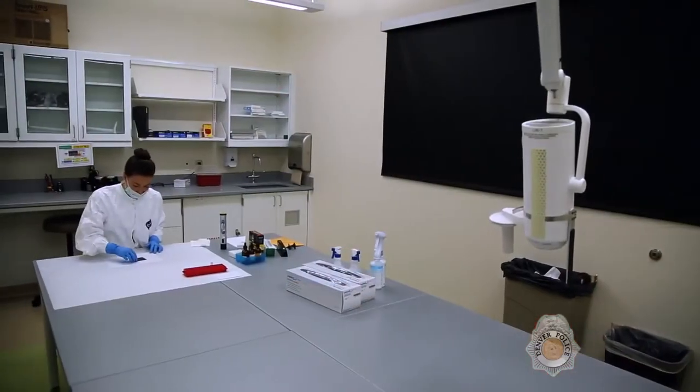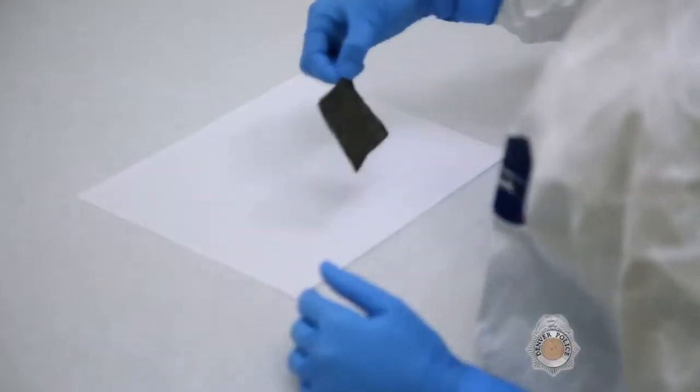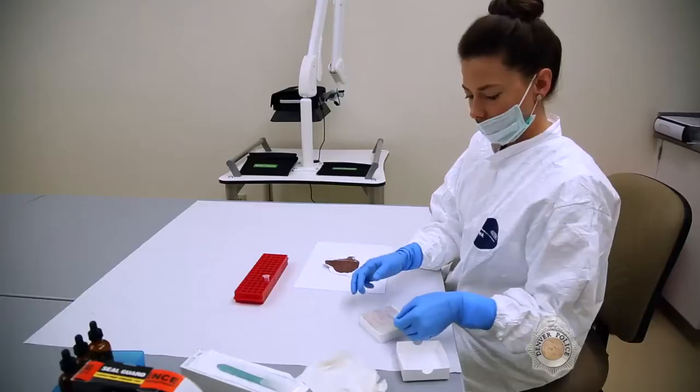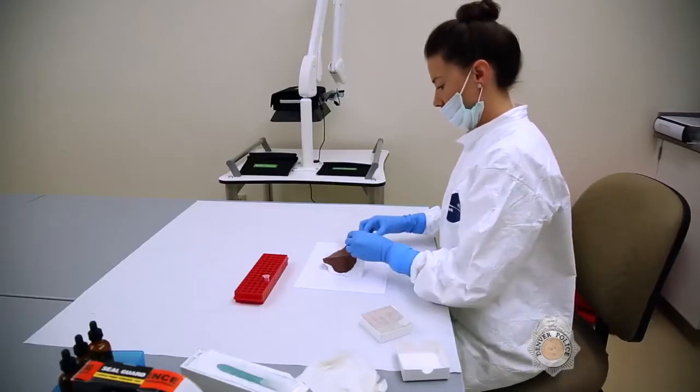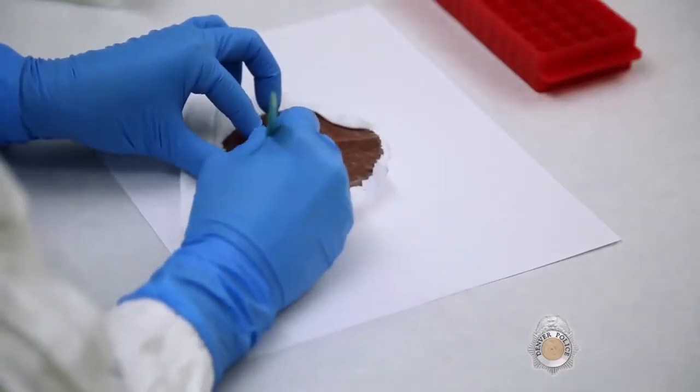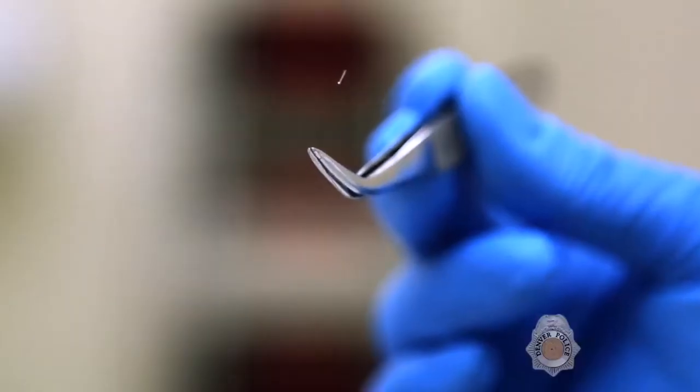Work in the Forensic Biology Unit begins with a visual examination of evidence for staining. Biologists take samples of potential stains to test for the presence of blood, semen, saliva, or cellular material. Hairs can also be tested if they contain roots suitable for DNA analysis.